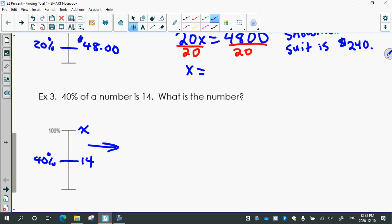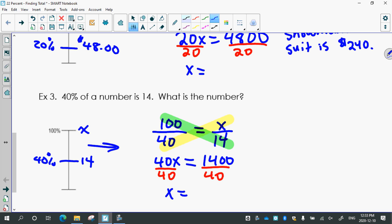So once you make your diagram properly, you can make your proportions. So 100 over 40 is x over 14. So 40x, find your x and multiply, is 1400. Divide by 40, 35.